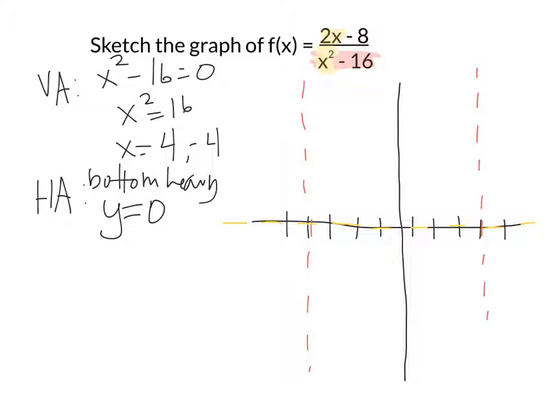The next thing we look for is the y-intercept—where does this thing cross the y-axis? We find that by plugging 0 in everywhere for x: 2 times 0 minus 8 over 0 squared minus 16. The zeros don't do anything, so negative 8 over negative 16 reduces to positive one-half. So right here it crosses the y-axis.